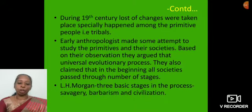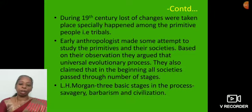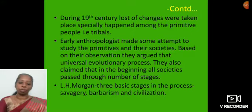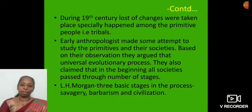During the 19th century, a lot of changes took place, especially among the primitive people, i.e. among the tribal community. Early anthropologists made some attempts to study the primitives and their societies. Based on their observations, they argued for a universal evolutionary process. They also claimed that in the beginning, all societies passed through a number of stages. L. H. Morgan identified three basic stages in the process: namely savagery, barbarism, and civilization.